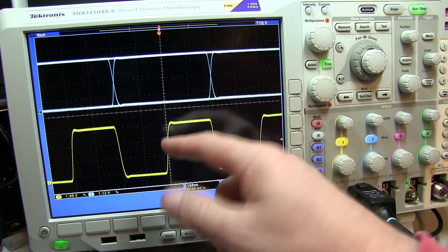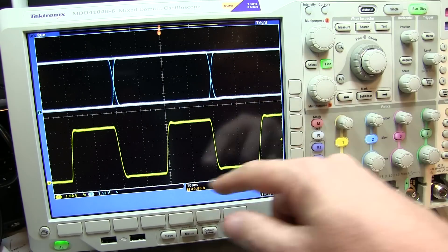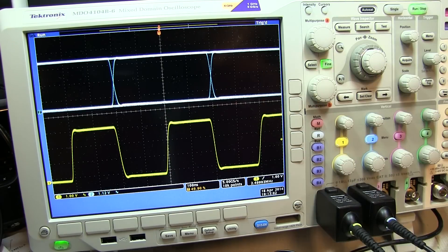So ideally you want to use a clock, a recovered clock, or a system clock that's going to be used to latch that data as your trigger source to look at the eye pattern.